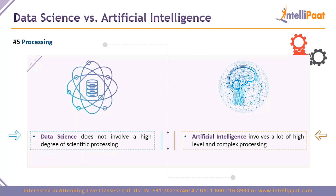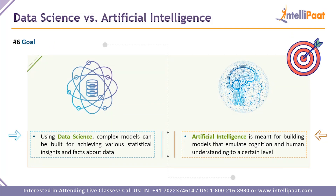Point five is processing. Data science does not involve the highest degree of scientific processing — it involves complex procedures, but not at the highest scientific standards. Artificial intelligence, as the name suggests, can be more complex, involving high-level and complex processing, because we're trying to implement autonomy in machines — essentially telling them to mimic the human brain, which is the most intelligent entity we know.